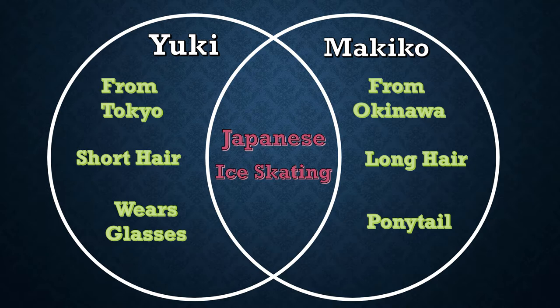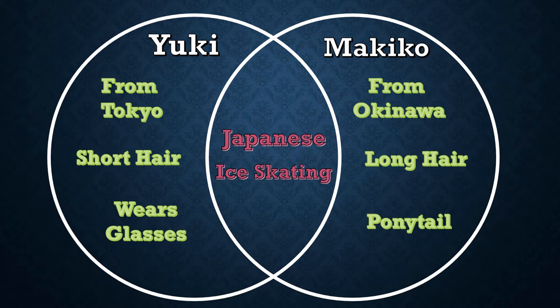To review: on the right side, we listed the things that make Makiko different from Yuki. We wrote: she is from Okinawa, she has long hair, she wears her hair in a ponytail. On the left, we listed the things that make Yuki different from Makiko. We wrote: she is from Tokyo, she has short hair, she wears glasses. And in the middle, we listed the things that they have in common or are the same about them. This is an example of how you would fill out a Venn diagram.